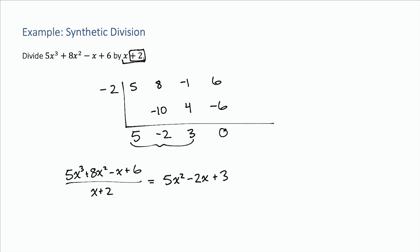And because our remainder is 0, we don't actually have anything over here. Normally we'd have the remainder over the divisor, but 0 over x + 2 is just 0. So I don't need to actually write that.